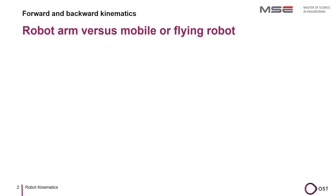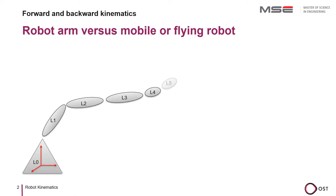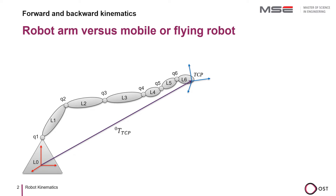The classic six-axis robot arm consists of a base with the base coordinate system L0 and the links L1 to L6. On the last link is the tool coordinate system and the tool center point. The links are connected by the joints Q1 to Q6. The term Q is used to denote generalized robot coordinates, which can be either rotary joints or linear axes. The position and orientation of the tool center point TCP in relation to the base is described with a homogeneous transformation matrix.